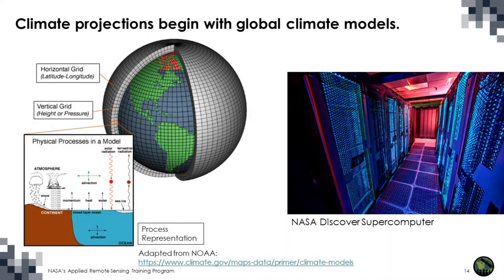To understand the climate system, we employ a set of high-performance computational models that try to represent the fundamental physical processes and chemical exchanges of our climate system and its interactions with human influence and broader natural climate variations over time. We look at a model that includes vertical levels and global coverage, information up into the high portions of the atmosphere and down to the depths of the ocean, trying to understand fundamental balances and exchanges throughout this entire system. Climate models require some of the most powerful computers in the world — for example, the NASA Discover supercomputer.